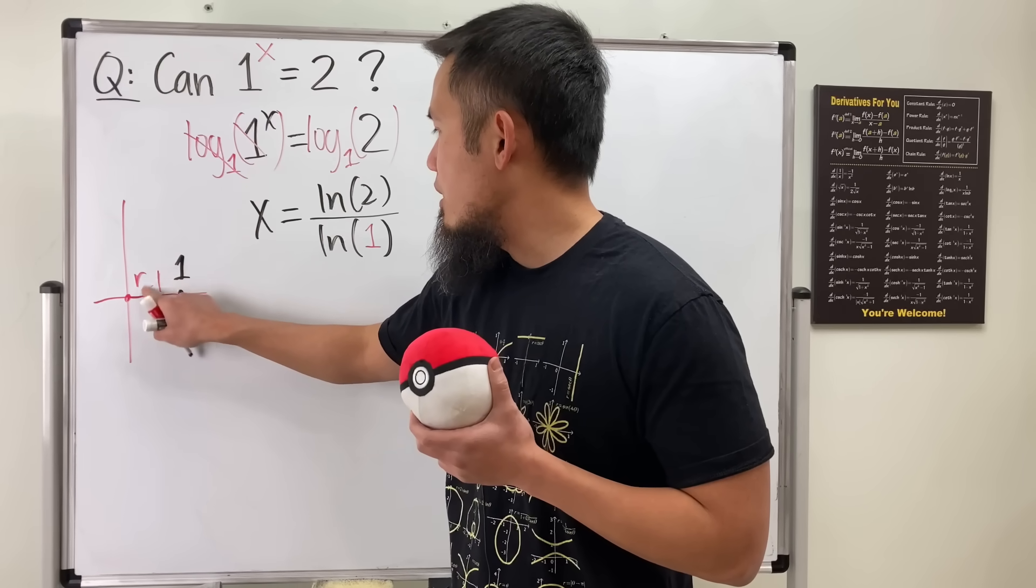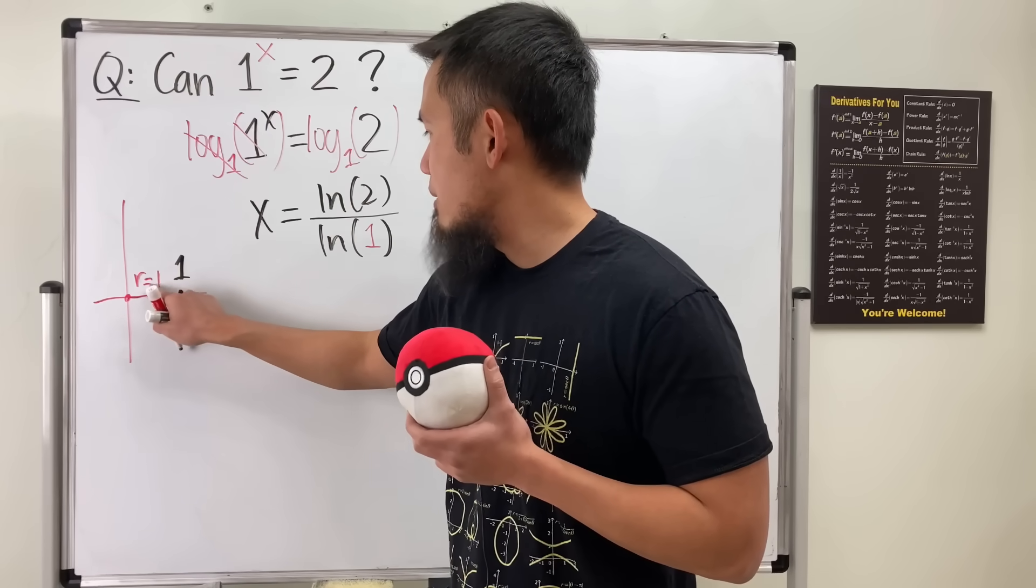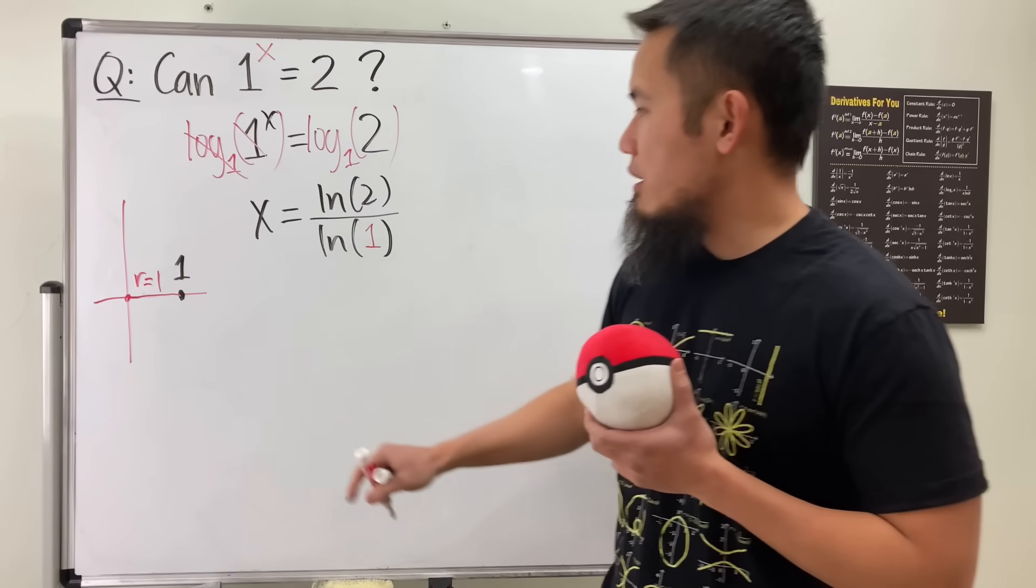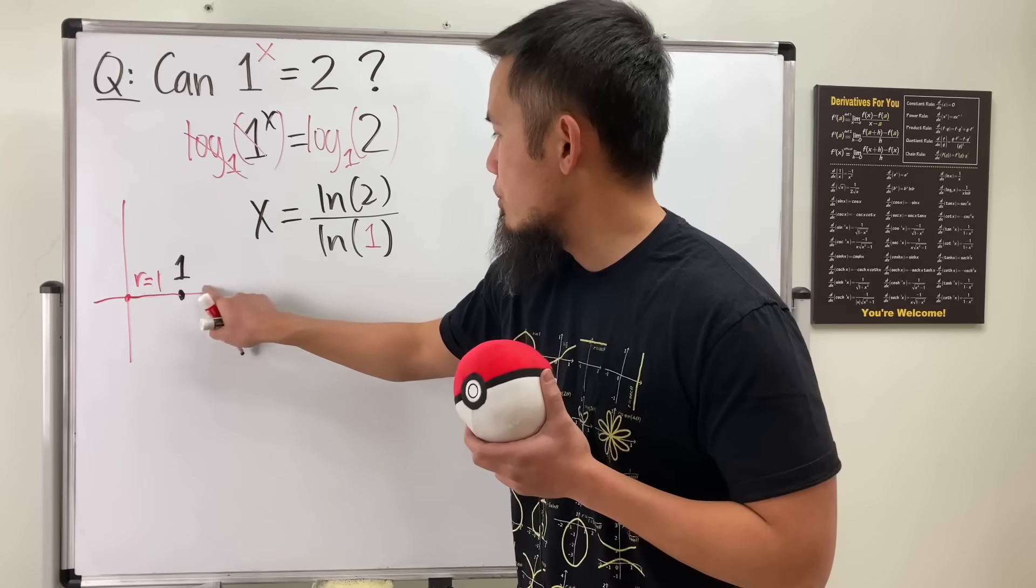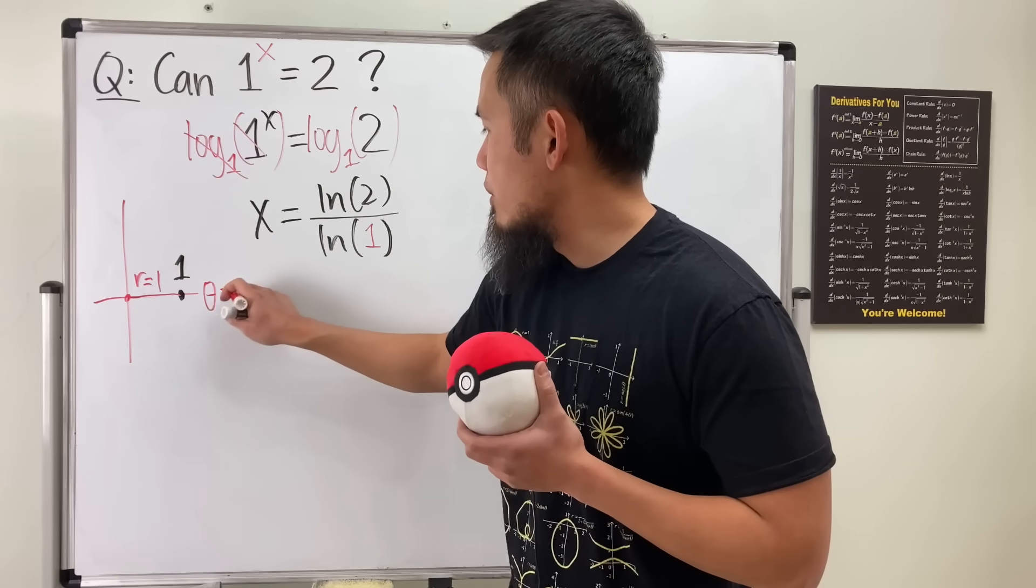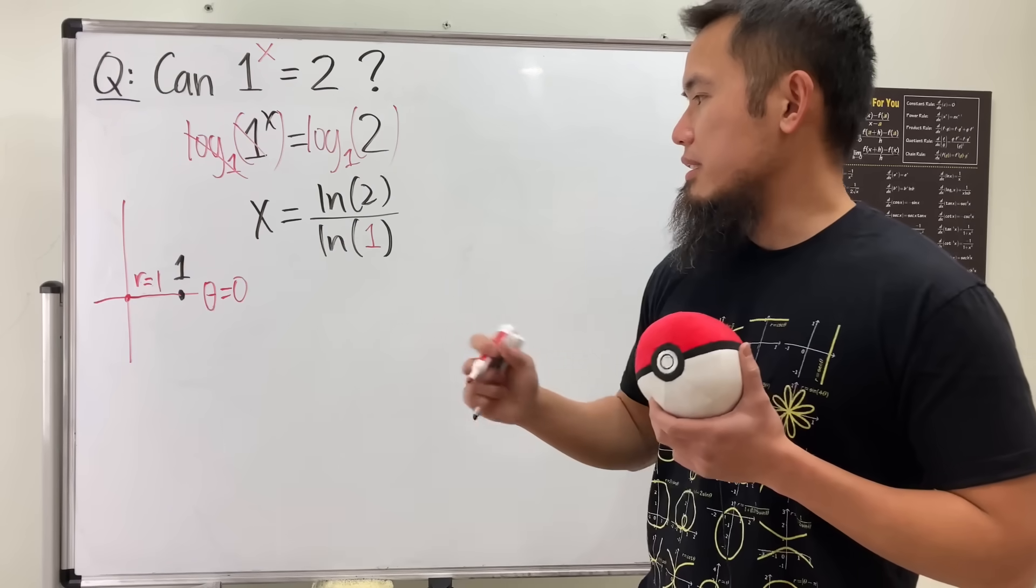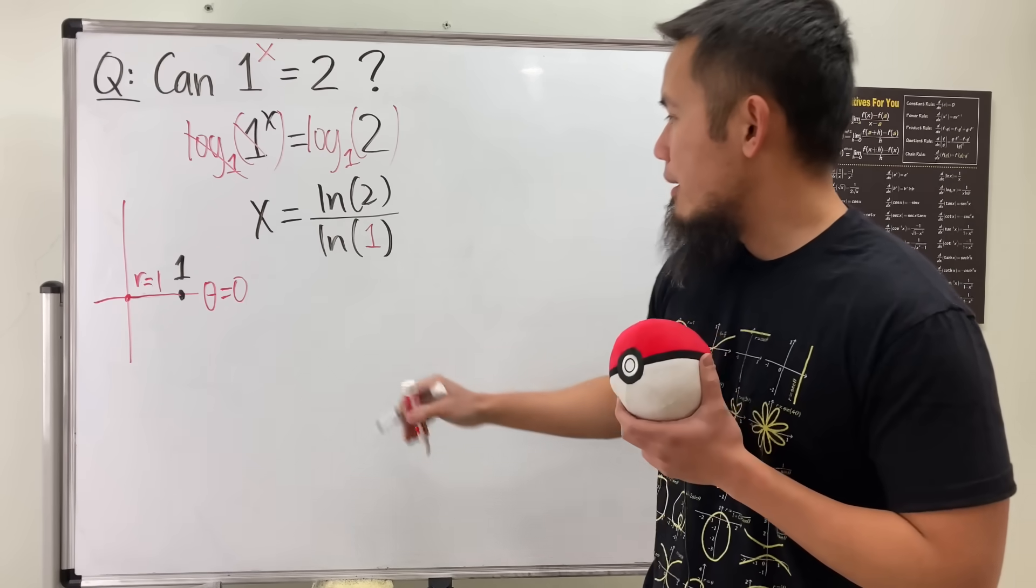And then the next thing that we need is the angle from here to here, which is just going to be 0. So let me just indicate that theta is equal to 0. All right, cool.